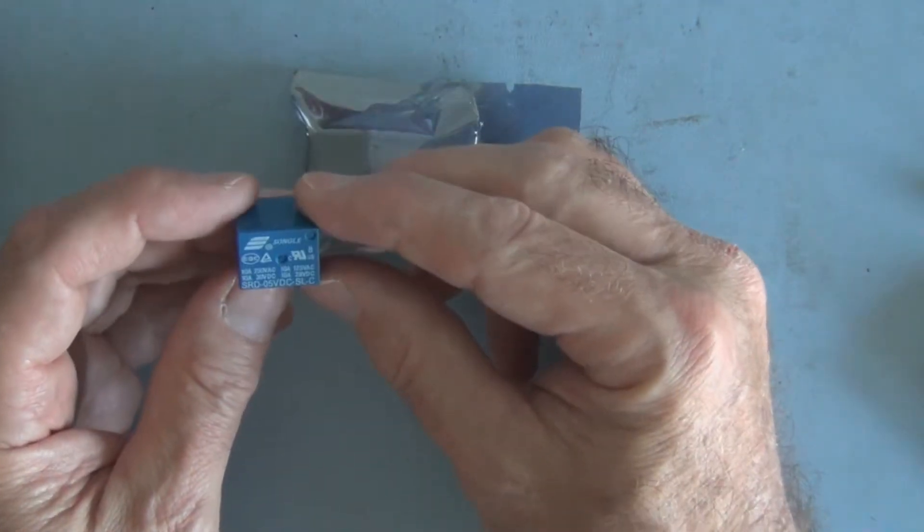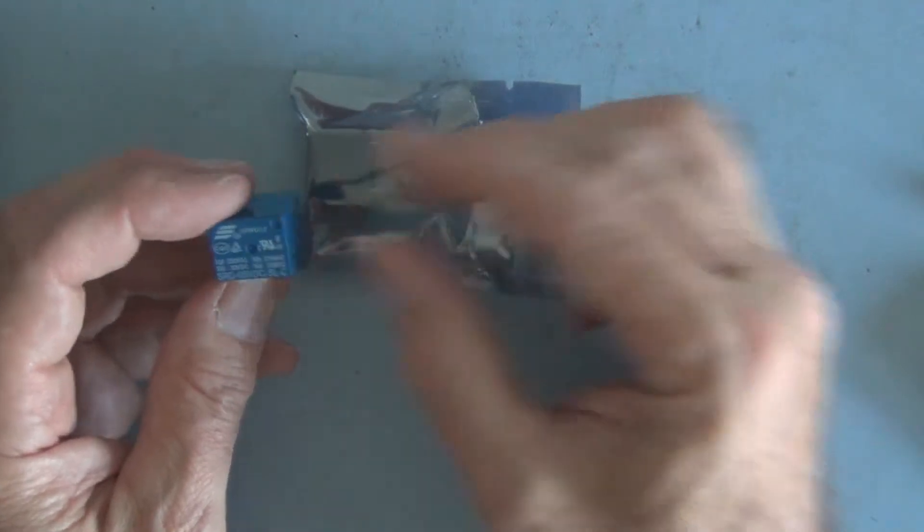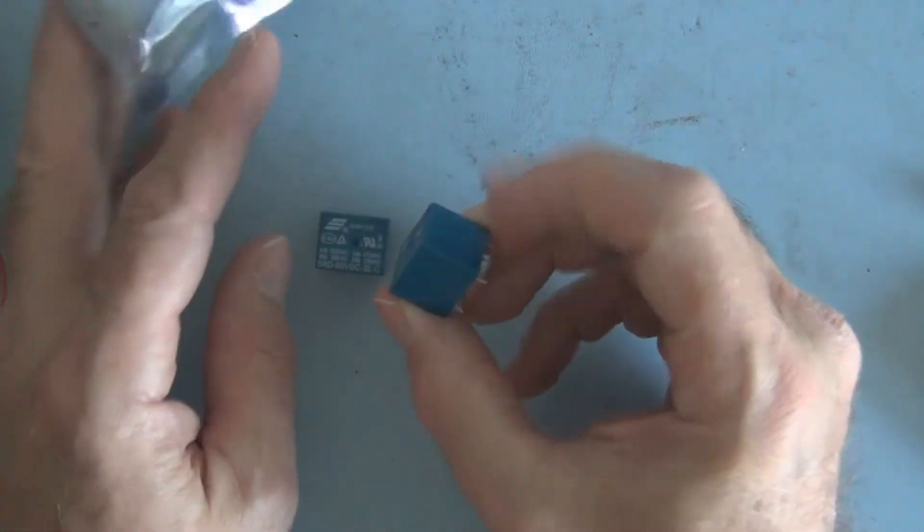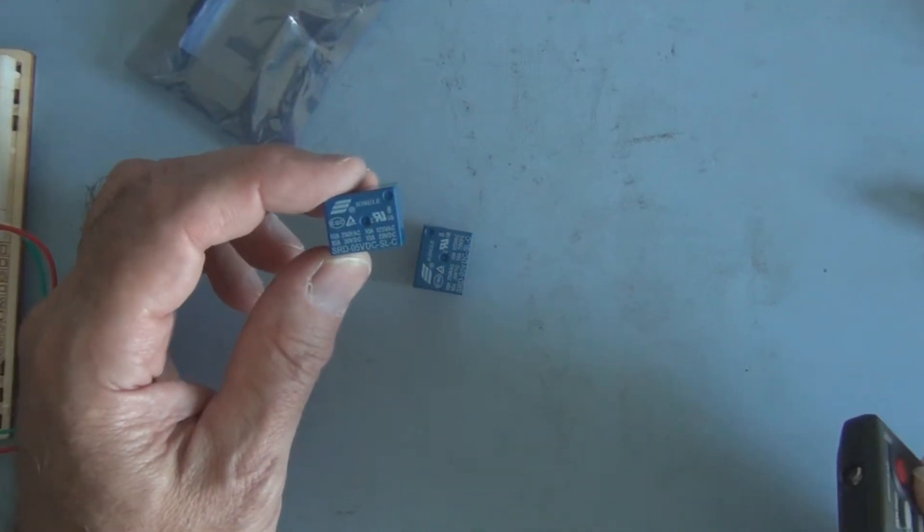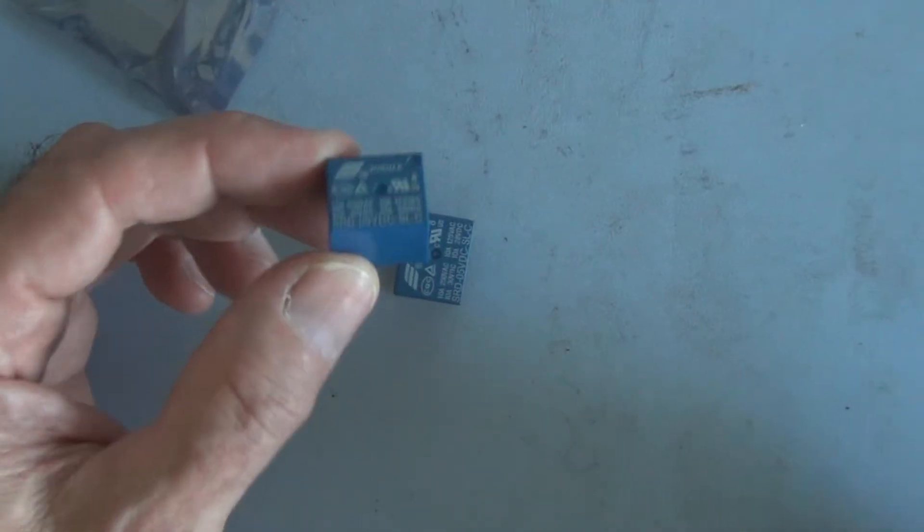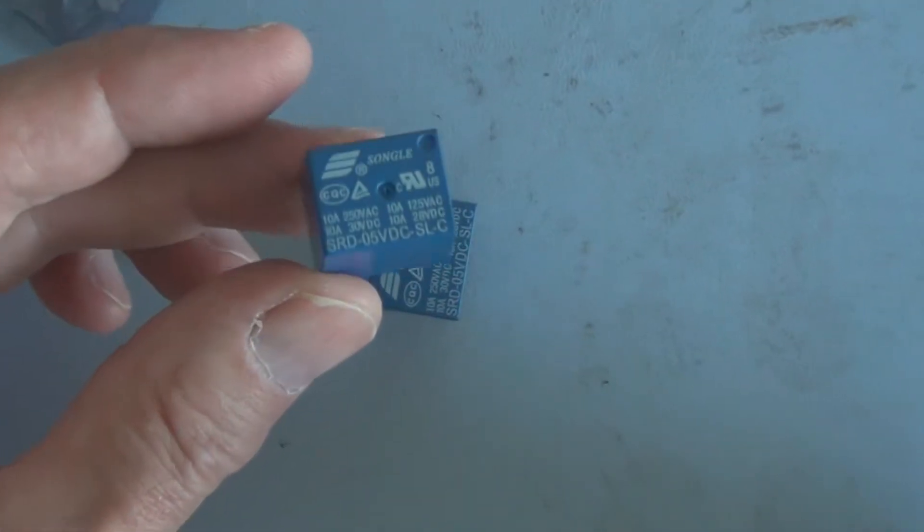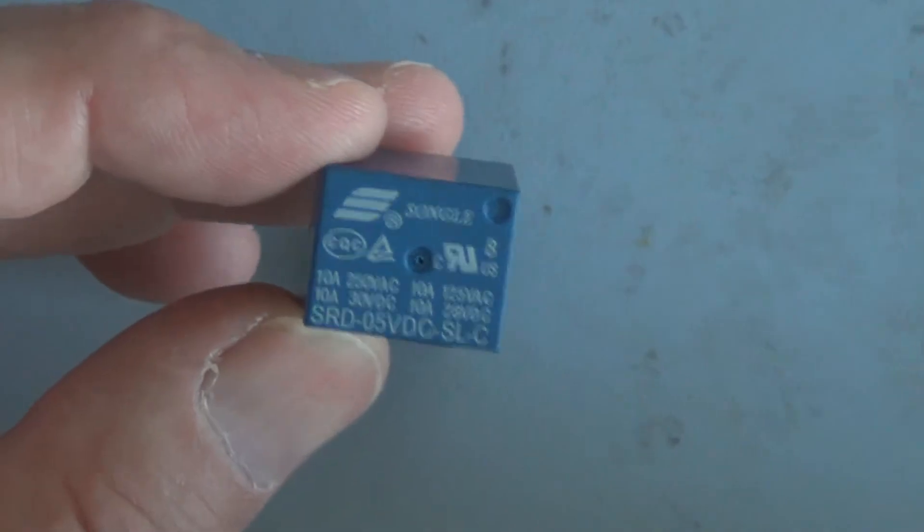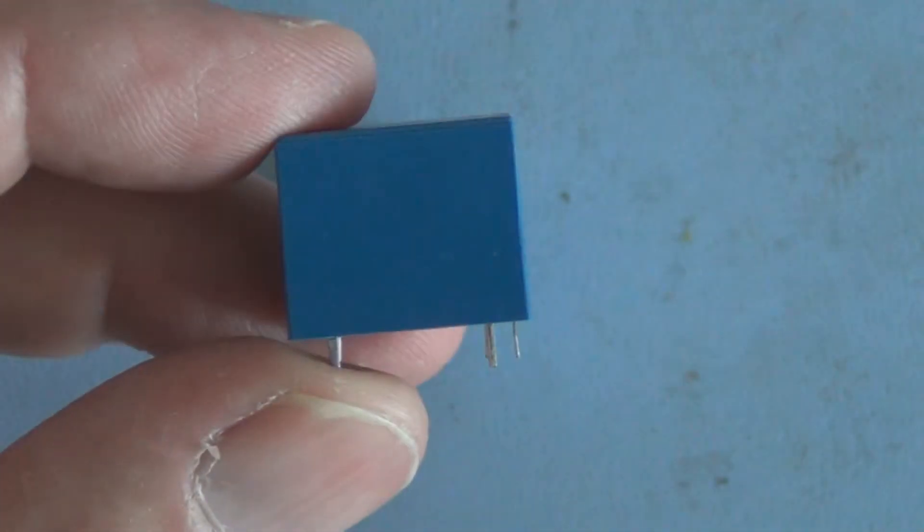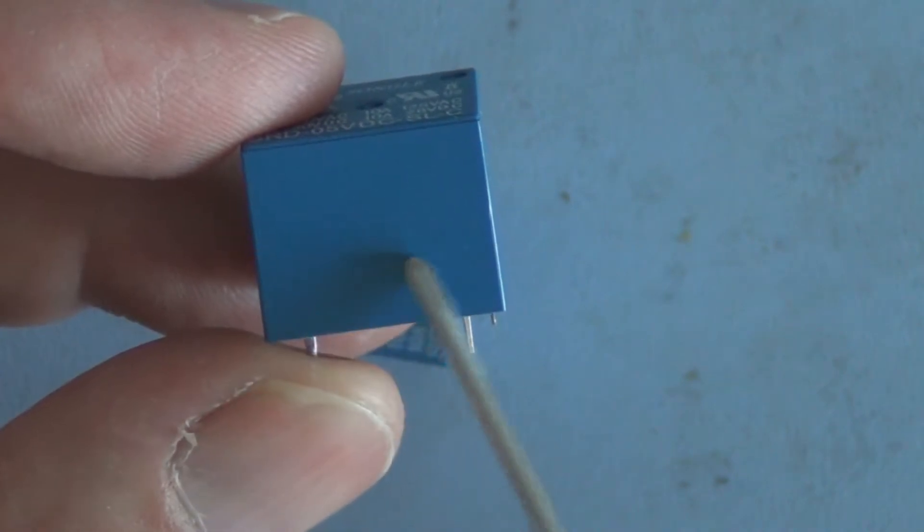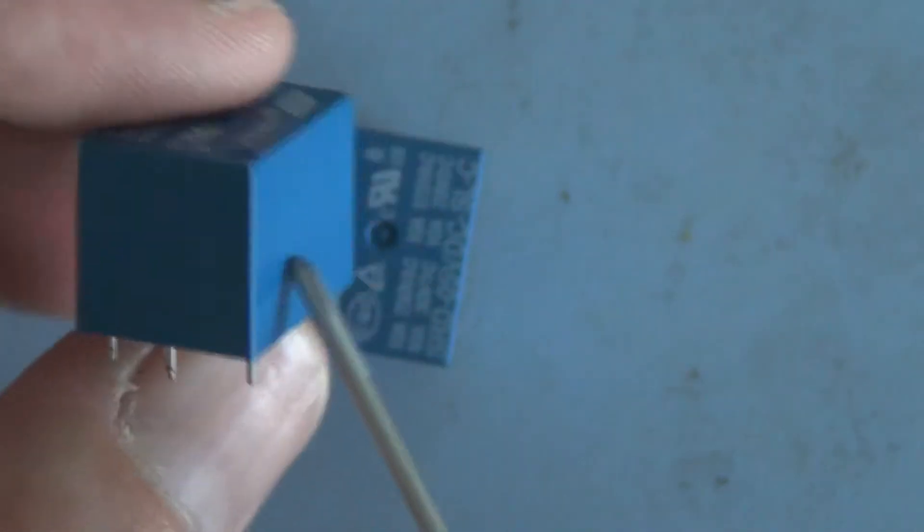These are actually the exact same relays, and I bought these off of eBay pretty inexpensive, so I don't mind destroying one in the process. Here's the relay, and I thought I'd take a Dremel tool and see if I can just cut through this plastic enclosure here.